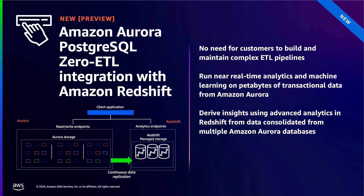A common architecture we see with customers is using Amazon Aurora as their operational database and Amazon Redshift as their analytic system. To make it easy to replicate data from Amazon Aurora databases to Amazon Redshift, AWS introduced at re:Invent 2023 the preview of Amazon Aurora PostgreSQL Zero ETL integration to Amazon Redshift. This feature syncs transactional data from Aurora into Redshift with change data capture in near real-time, enabling near real-time analytics and machine learning on petabytes of transactional data, fully managed, with data available in Redshift within seconds of being written to Aurora. This eliminates the need to build and maintain complex ETL pipelines.